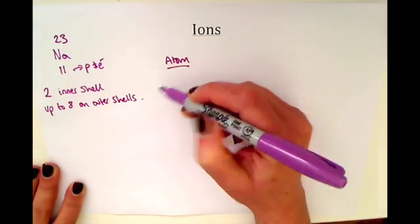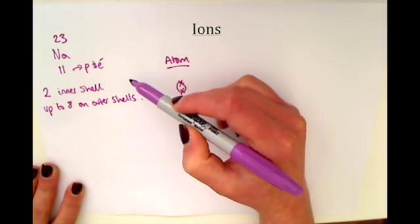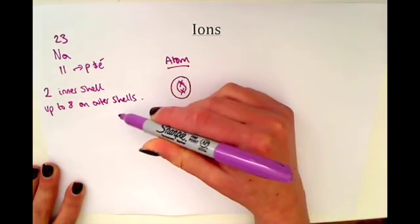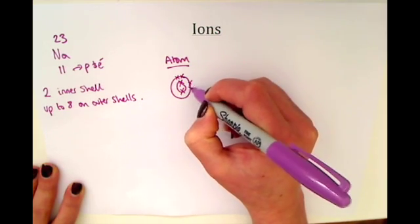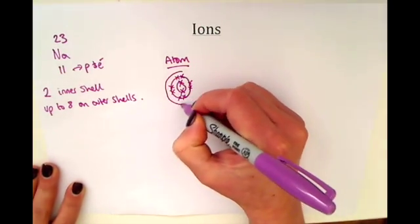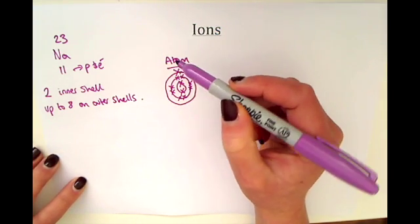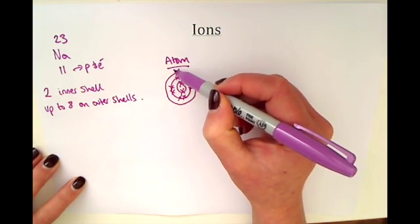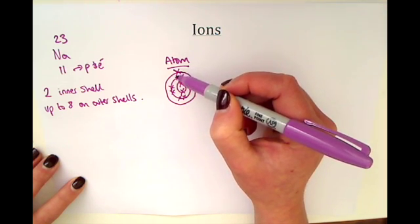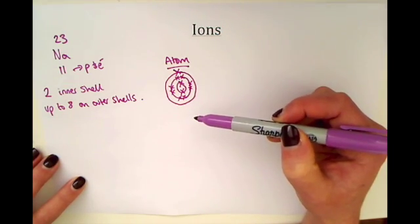Using these rules, we start with two electrons on the inner shell and need to draw a further nine electrons. So we have one shell where we can put up to eight, and then a final shell with just one electron. We can double-check this is right because sodium has one electron in its outer shell and therefore should be in group one of the periodic table, as the number of electrons in the outer shell tells us the group.